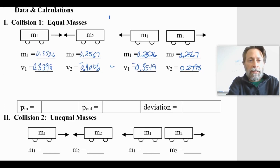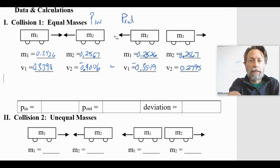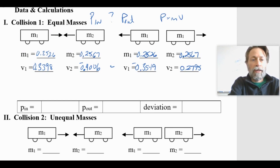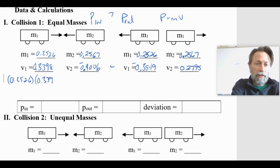Now that we have the data for the first trial, let's set up the problem. Conservation of momentum says that momentum in equals momentum out. We want to determine if they're equal. Momentum is mass times velocity, so I'm going to take mass times velocity for each object before the collision and add them together to get momentum in. I'll take mass 0.2526 times a velocity of 0.3398.